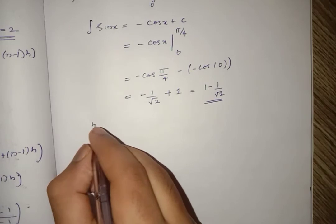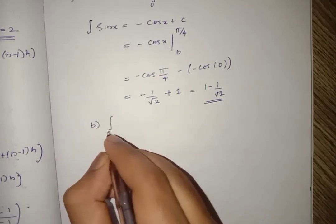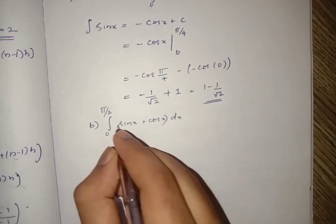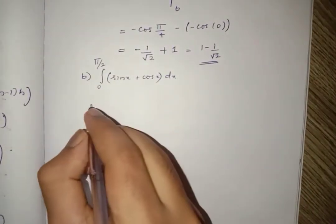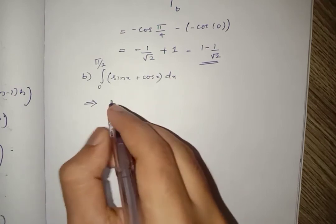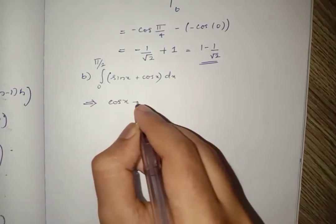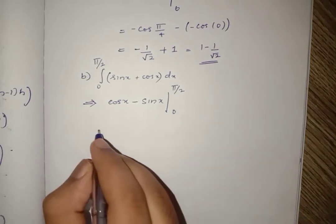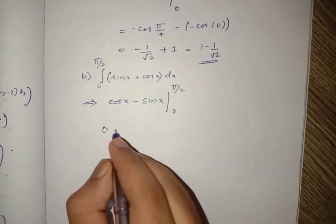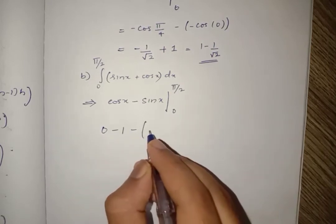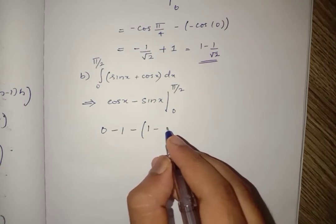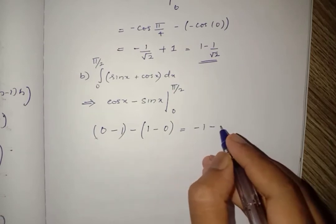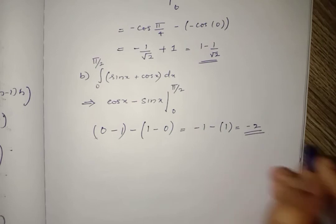Let us move to part B: evaluate integral from 0 to π/2 of (sin x + cos x) dx. The integral of sin x is -cos x and the integral of cos x is sin x. Applying limits: [-cos x + sin x] from 0 to π/2 gives (-cos(π/2) + sin(π/2)) - (-cos(0) + sin(0)) = (0 + 1) - (-1 + 0) = 1 + 1 = 2.